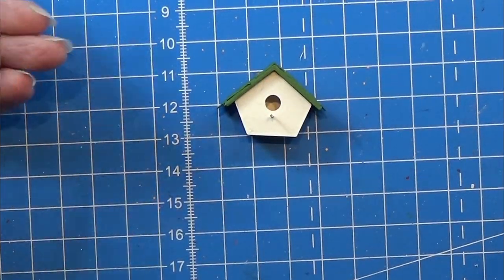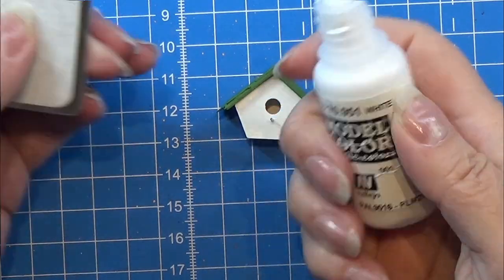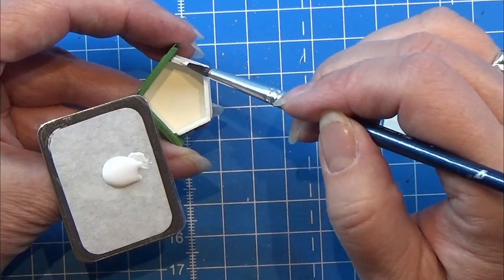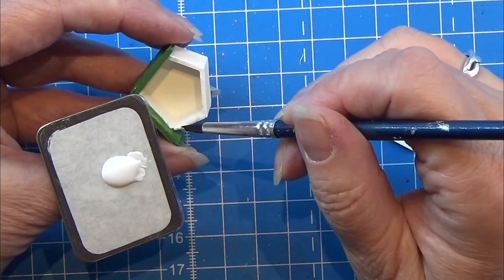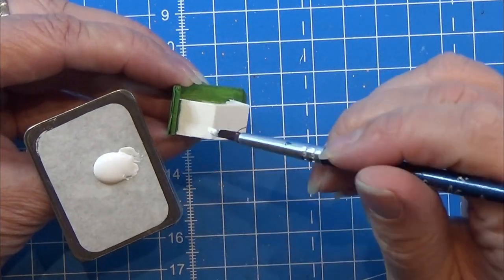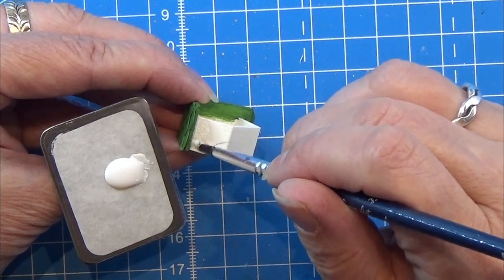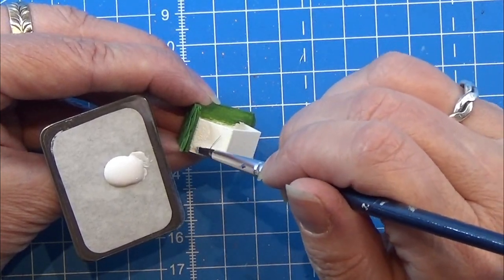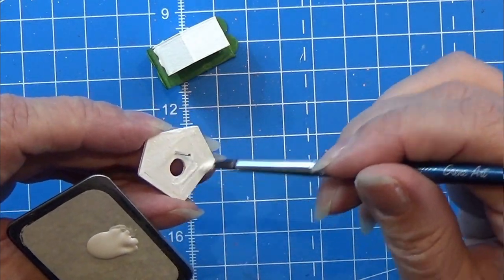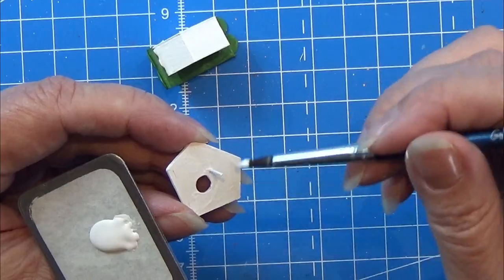I know I 3D printed this in a white PLA but I am going to use my white Vallejo paint here and paint everything that needs to be white, white again. Remember the backside and the front of the birdhouse. You can use another color if you'd rather wanted another color.